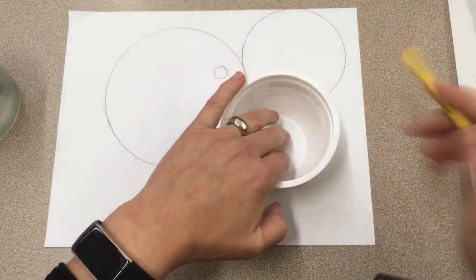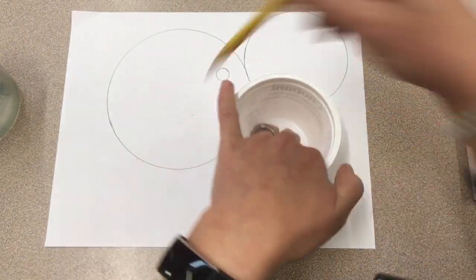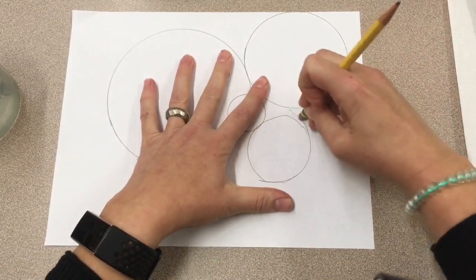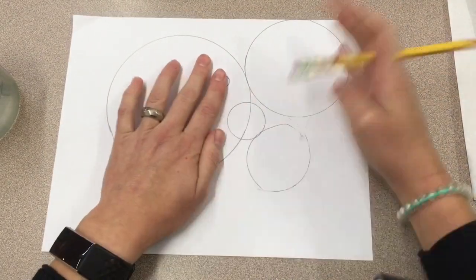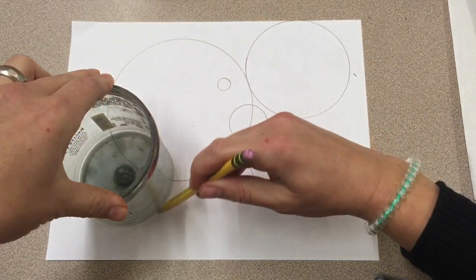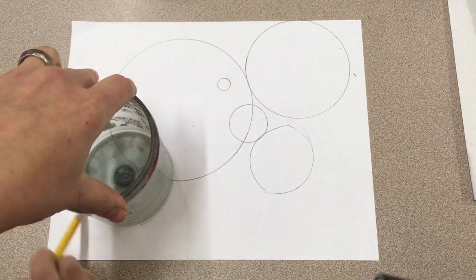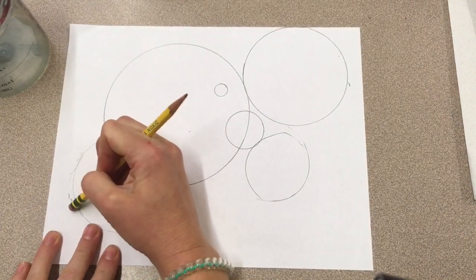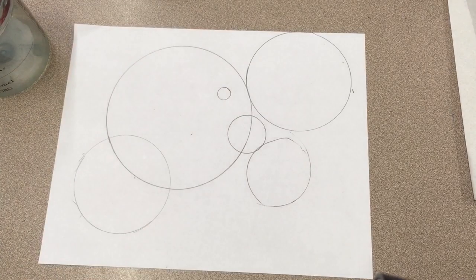You can try tracing it top and bottom, try overlapping your circles to make different designs. I'm using pencil so I can erase any mistakes I make.